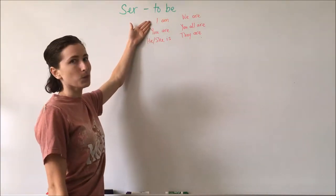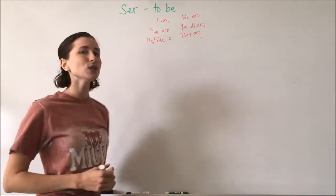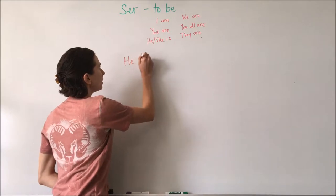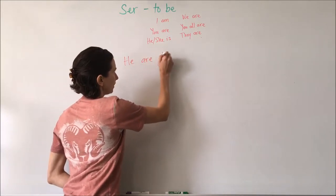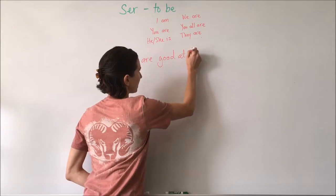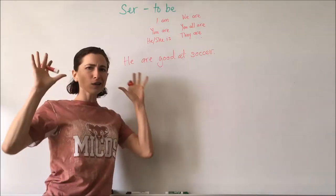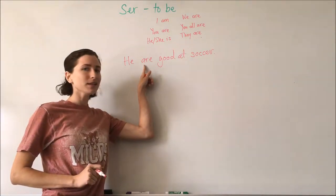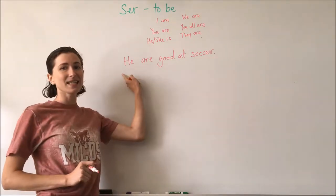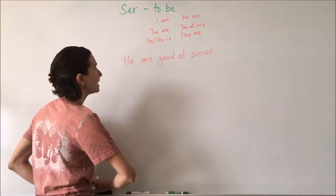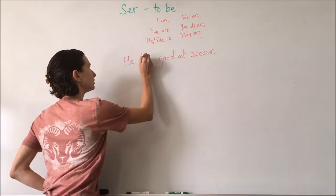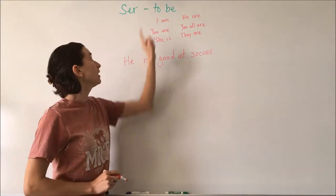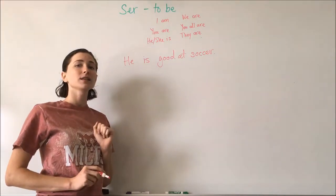We say 'I am' — we don't say 'I is.' If you saw a sentence that said 'he are good at soccer,' alarm bells would immediately go off because you know that 'are' does not correspond to 'he.' We would say 'he is good at soccer' because 'is' is the correct conjugation of the verb to be for the subject 'he.'